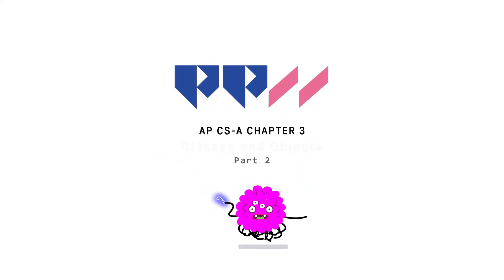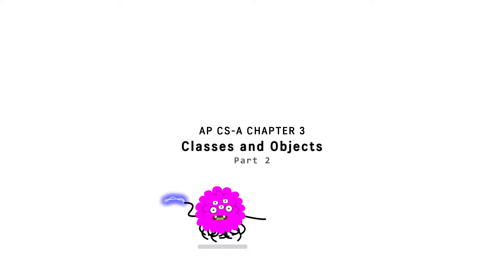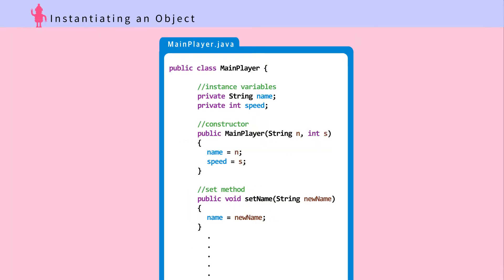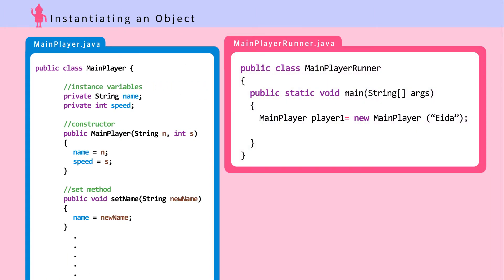Chapter 3, Classes and Objects. The class cannot create the object itself. It has to be instantiated or created outside the MainPlayer class. Remember that we need a main method to run the Java program, so we're going to create another class that has the main method. This class is usually referred to as the Runner class, and it runs the program. This file is called MainPlayerRunner.java.